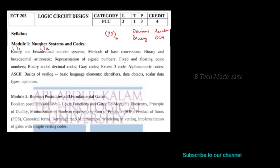We call these base conversions. We convert a decimal number to its equivalent binary number or equivalent hexadecimal number. This is the concept of base conversion.